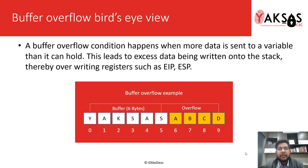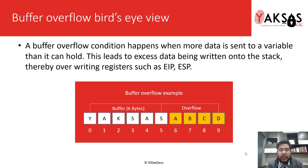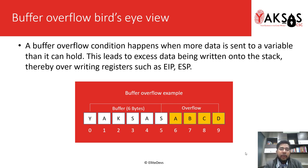Moving on to the first part, let's have a bird's eye view of what a buffer overflow is. In very simple language, a buffer overflow is a condition that happens when more data is sent to a variable than it can hold. This leads to excess data being written onto the stack, thereby overwriting registers such as EIP and ESP, which gives us control of the application we are exploiting. As you can see in the image below, we have a buffer of 6 bytes in which we have written YAKSAS, and if we send it more data — that is YAKSAS ABCD — this overflows into the adjacent memory locations and may overwrite stack-based registers, helping us exploit this vulnerability.